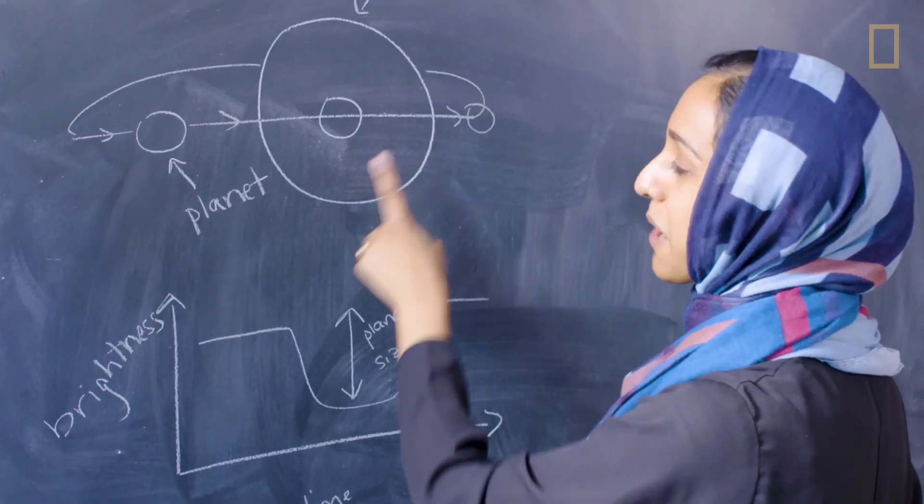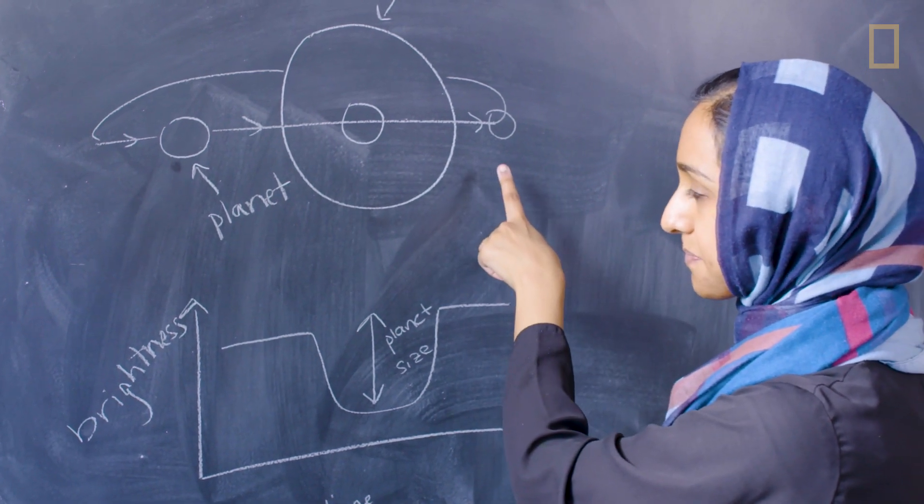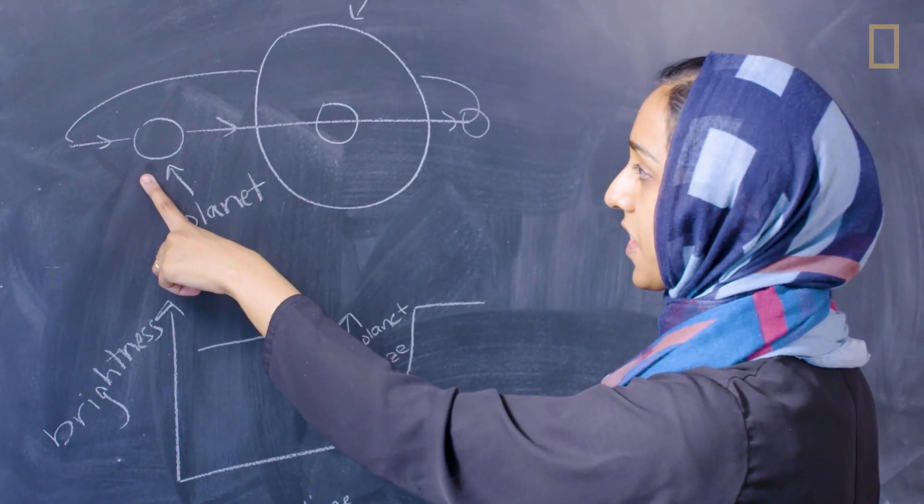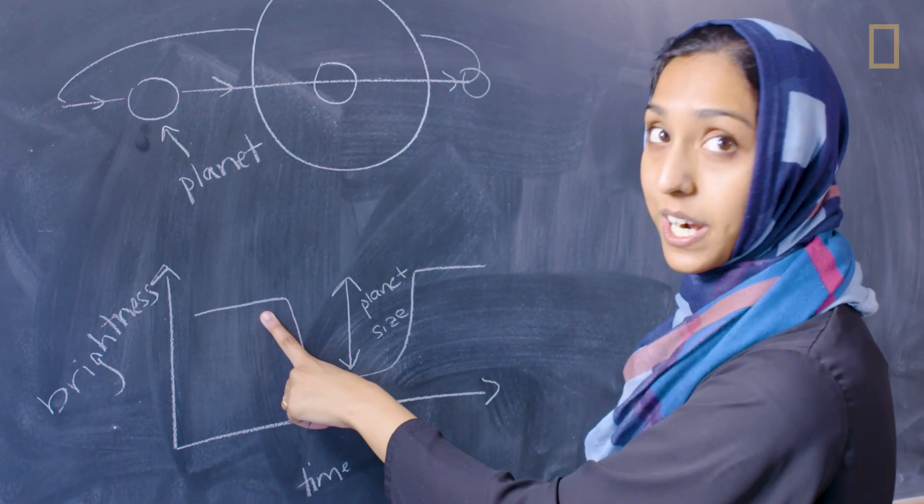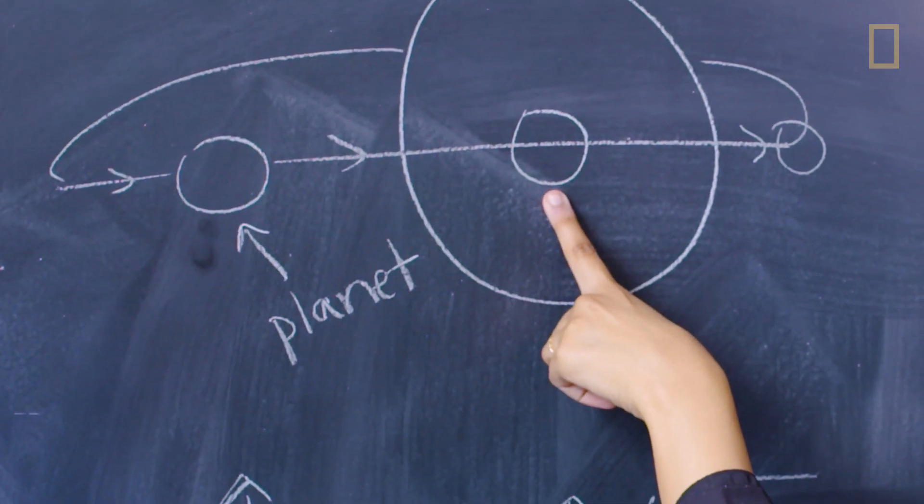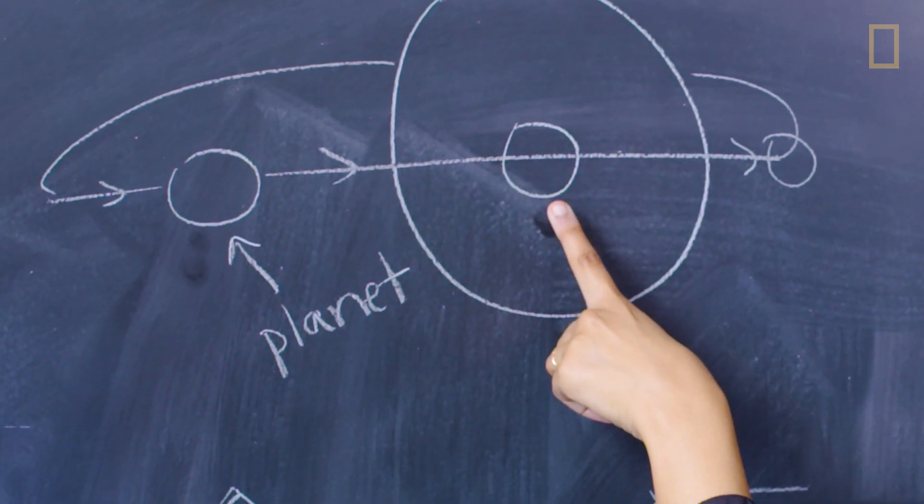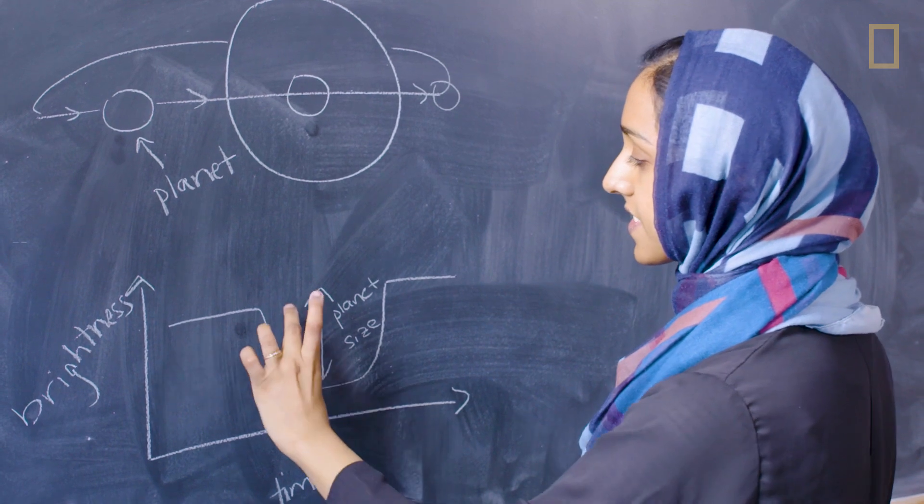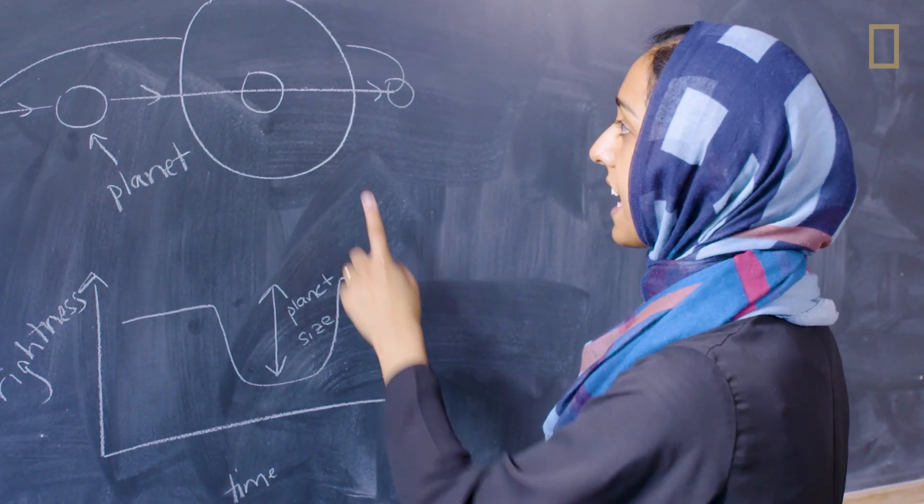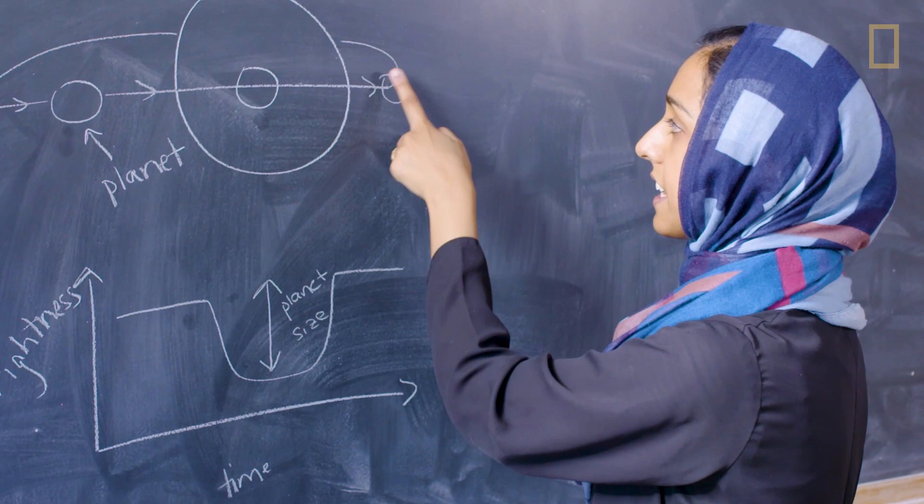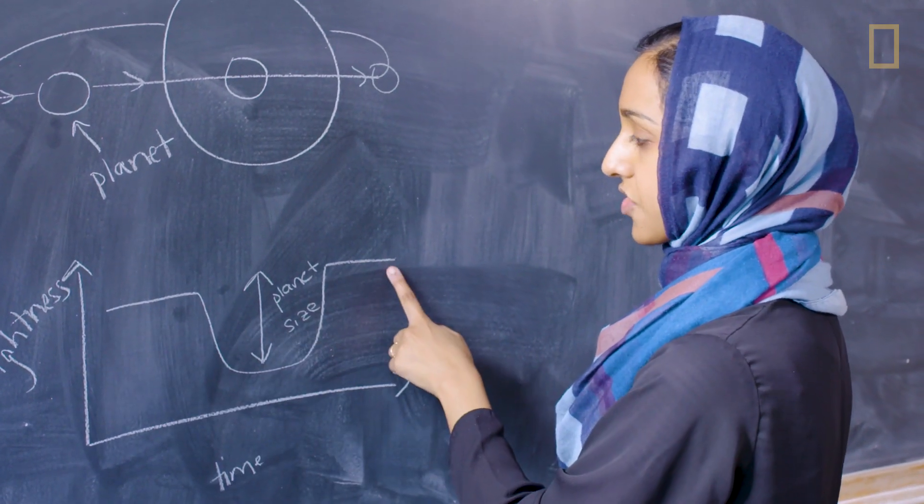So, if we have our star, and we have a planet passing in front of it, when the planet is on this side of the star, we just observe the light from the star. But when the planet is in front of the star, then it blocks a portion of the light, and that causes this dip in the brightness of the star. And then when it passes, it again restores the brightness of the star.